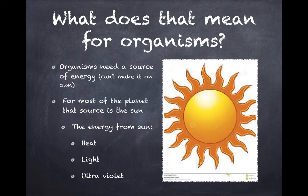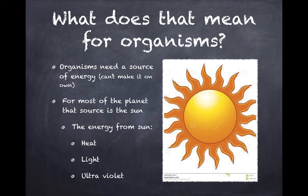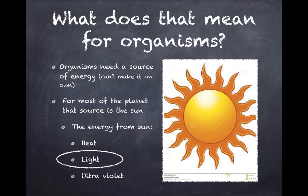So what do we mean by that? Because energy can't be created or destroyed, organisms need to have a source of energy — they can't make it on their own, so energy has to be put into any system. For most of our planet, that energy source is going to be the sun. Coming from the sun we have heat, light, and ultraviolet radiation — all three are strong sources — but it turns out light energy is the most important to us as far as organisms interacting with one another.